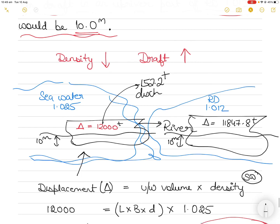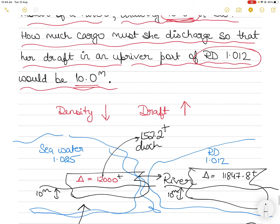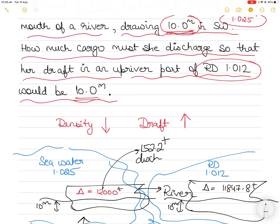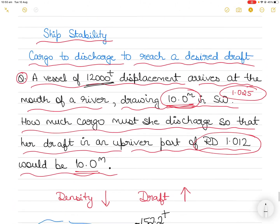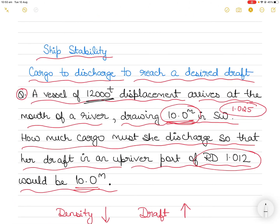If I discharge 152.2 tons and then enter the river, my draft will be unchanged at 10 meters. Otherwise, if I had gone in with the same displacement, because of the lowering of density my vessel would have sunk and the draft would have increased. I hope you've understood this question. I'll take up more ship stability questions in future, including questions regarding load lines. See you next time.